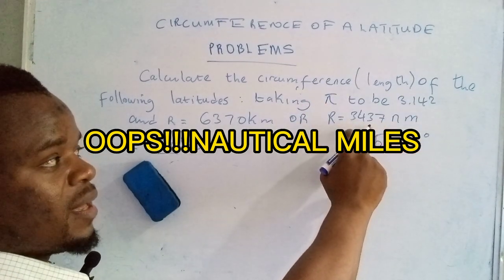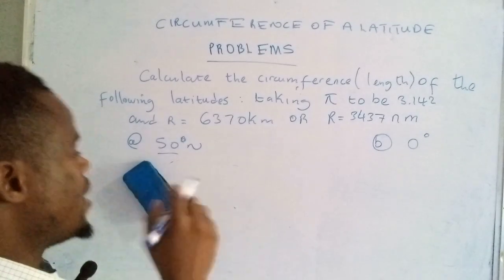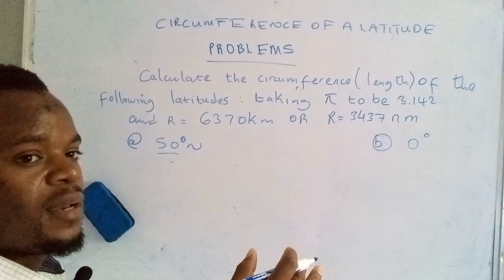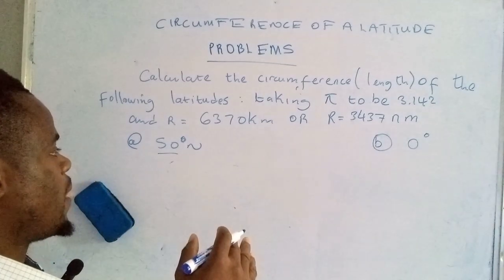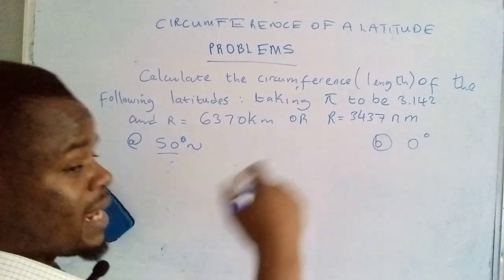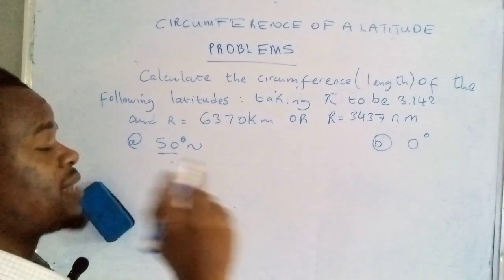So the radius of the earth in nautical miles has that value, in kilometers has that value. The question is how do you determine the radius of a latitude? So this is one of the latitudes, that is the other latitude. So now how do you determine their circumference?